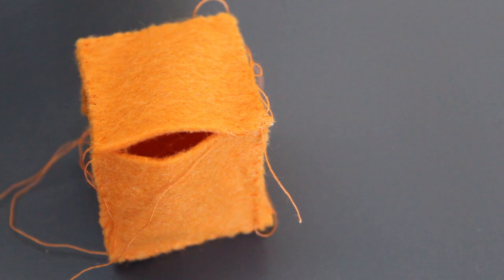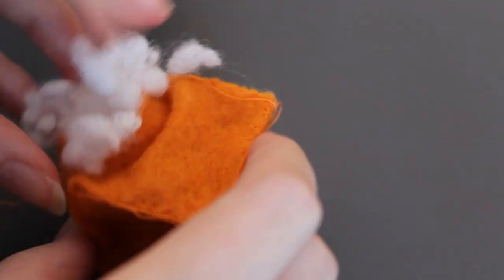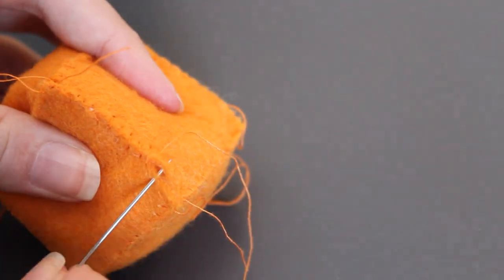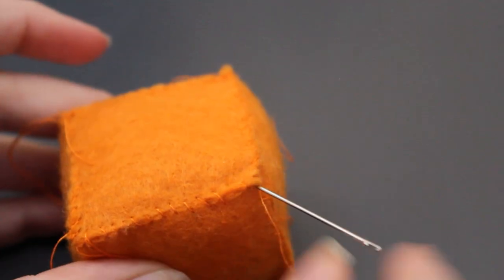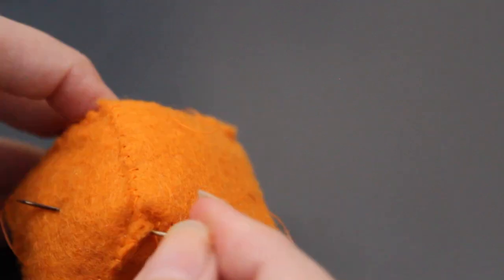Leave a little gap and fill the cube with stuffing. And then you can finish sewing it. Now work the last threads away like you see here in the video.